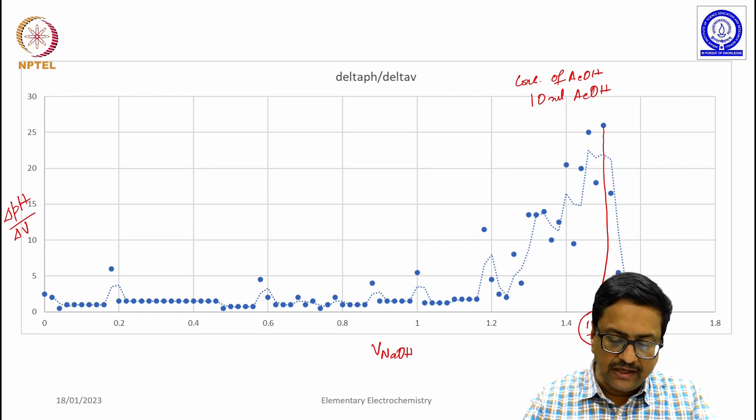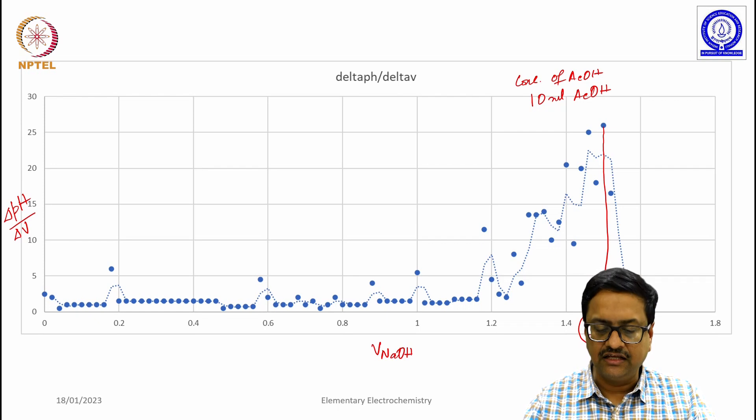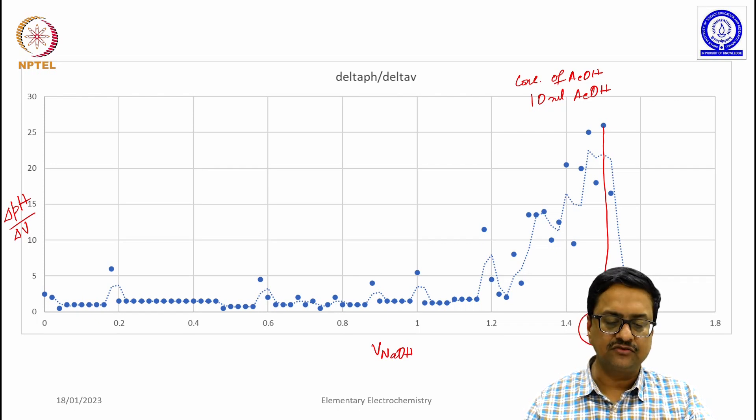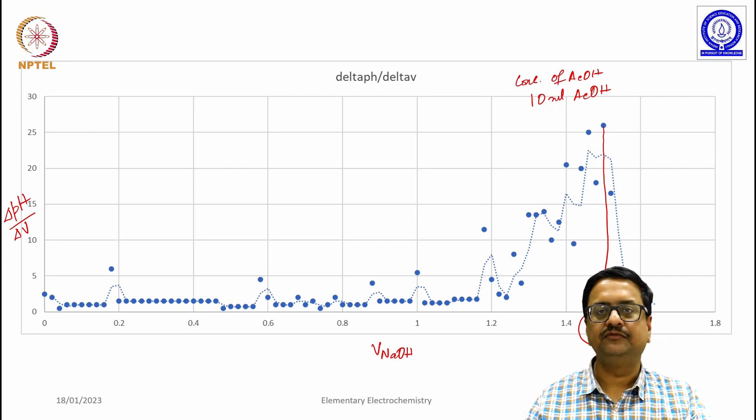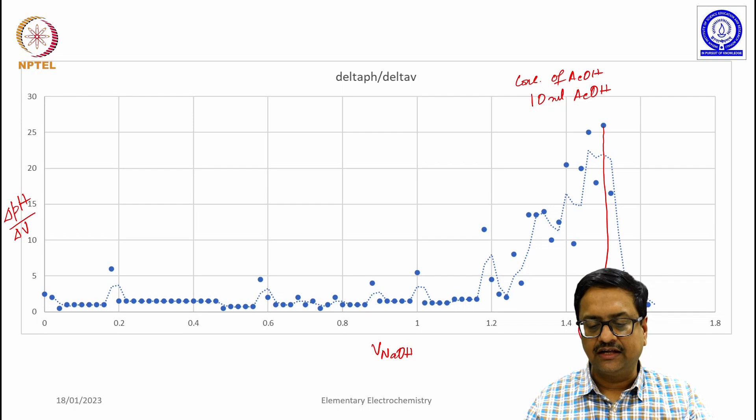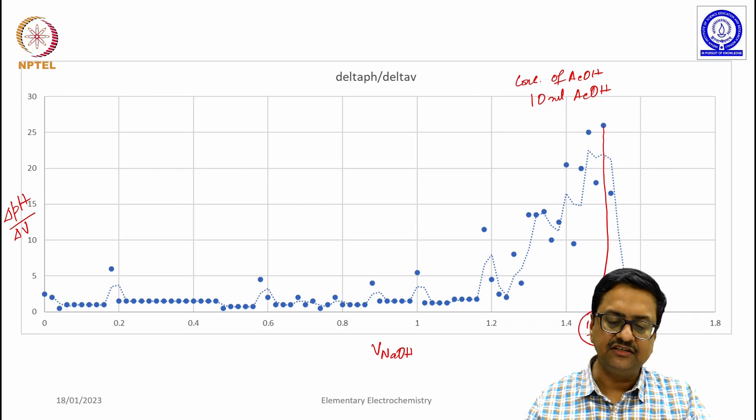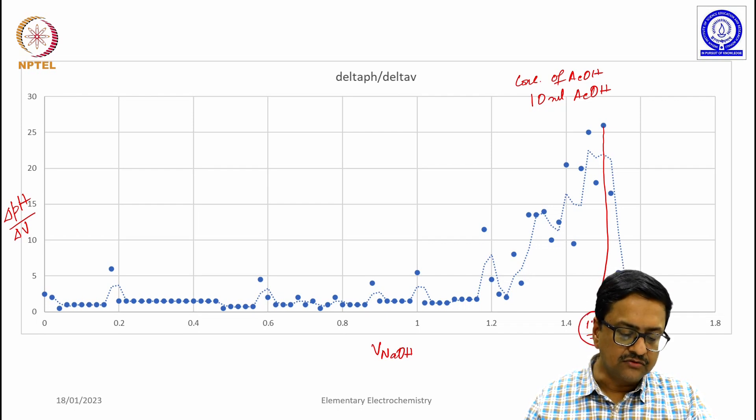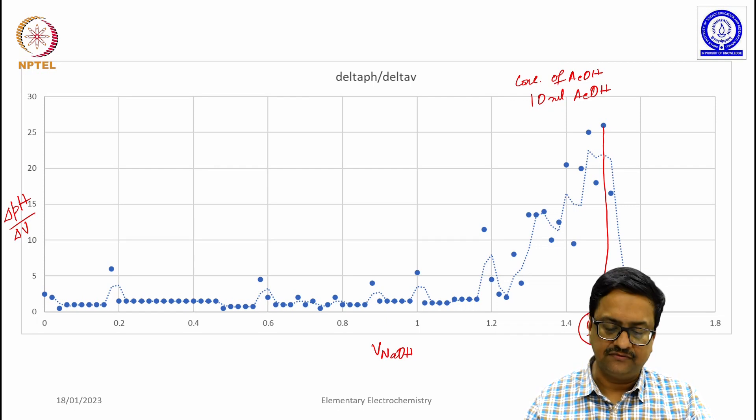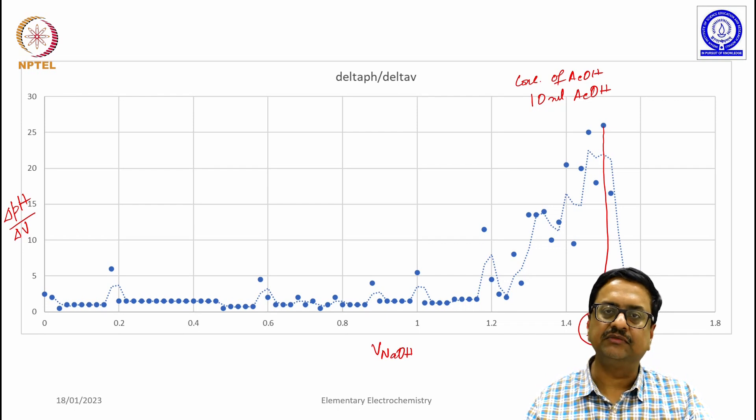The main aim of this experimental demonstration was to show you that how one can use potentiometric titrations for acid base titration. One can follow the pH and change in pH to get the end point of acid base titration without an indicator. Hope you have enjoyed this experimental session.